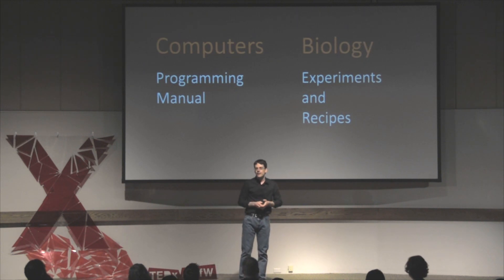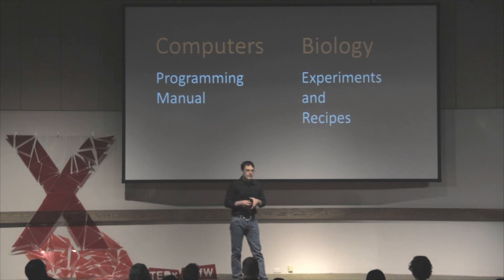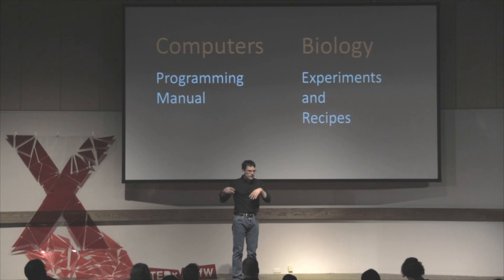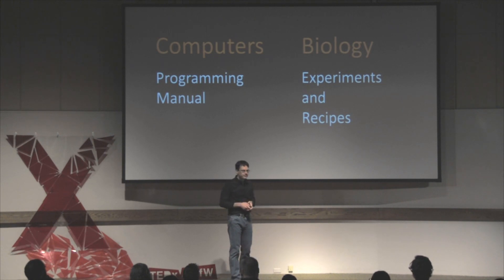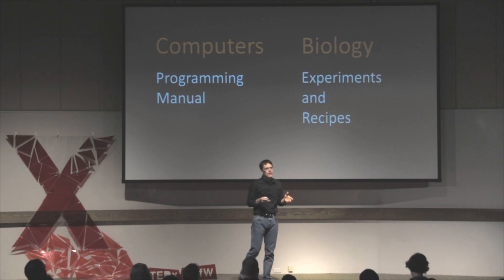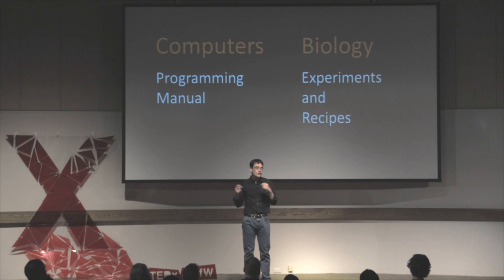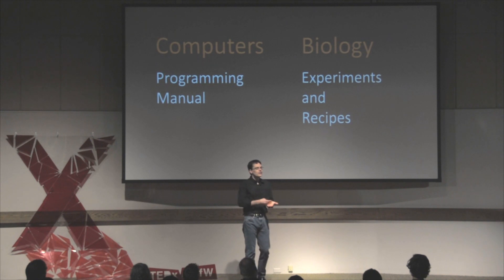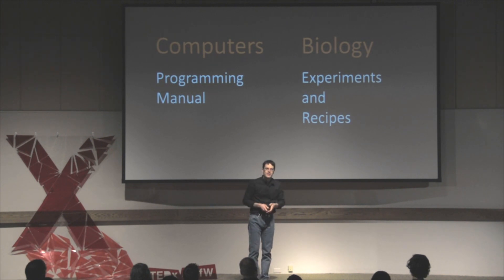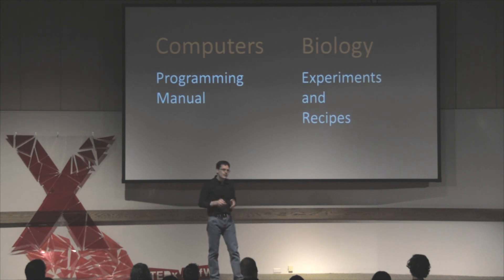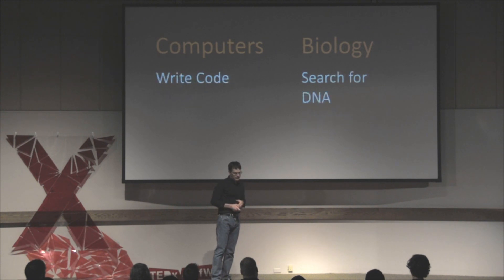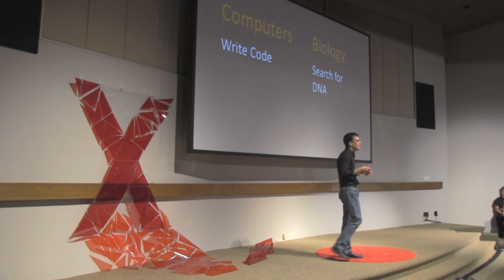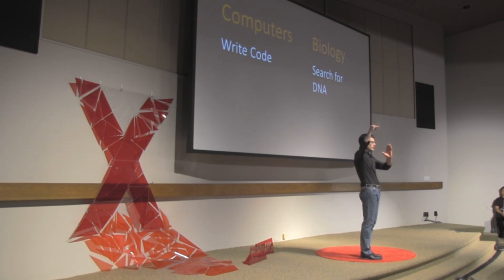So I started looking at the differences between computers and biology. In computers, you get a programming manual that tells you everything going on inside your computer — from the hard drives, to the monitor, to the programming languages and the meaning of all the statements. In biology, you can look at the DNA for a living organism all you want — you're not going to figure out what it does until you go to the lab and start doing experiments on it. If I change this little bit of DNA, what happens? In order to do those experiments, you use recipes that have been handed down from generation to generation of biologists in a sort of master-apprentice way. That's nothing like computers, where my kid can learn to program at school. And because there's no computer programming manual for biology, you can't just write code and start coding up TherapyX with a debugger and an online simulator.